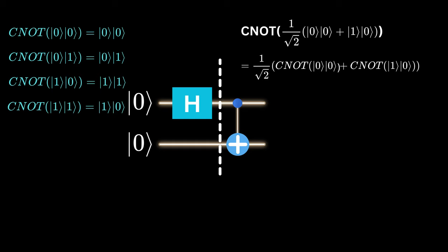So the CNOT of 1 over square root of 2, 0, 0 plus 1, 0 is equal to 1 over square root of 2, CNOT of 0, 0 plus CNOT of 1, 0. But remember that quantum gates are linear transformations.